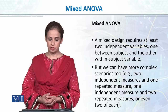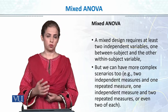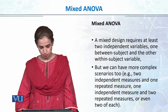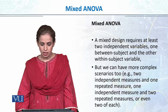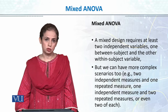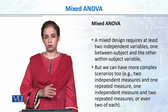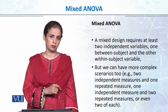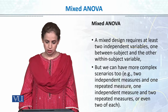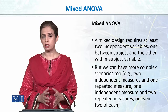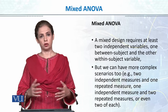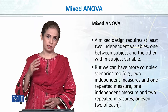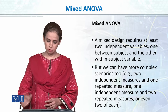A mixed design requires at least two independent variables — one between-group and one within-group variable. But we can have more complex scenarios too, where we have two independent variables and one repeated measure, or two repeated measure variables and one independent group design. ANOVA has a whole variety of extensions — you can have factorial designs such as 3×3×3×3, and combine between-group and within-group variables.